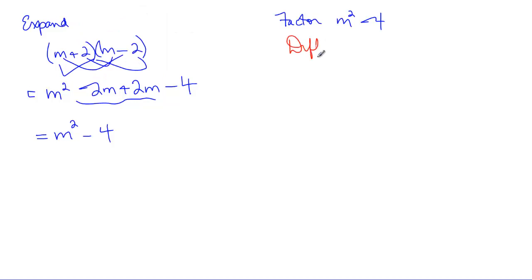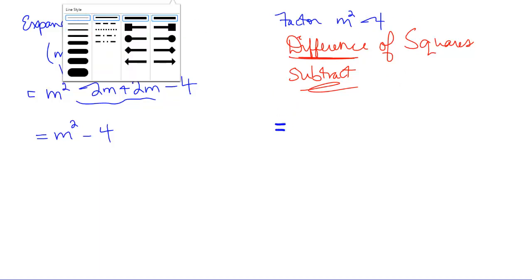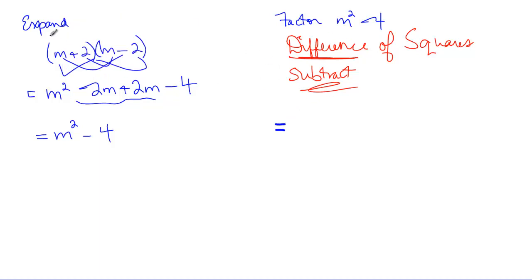How can we use what just happened here to find a pattern to factor this? This is something, it also has a special name. This is something called a difference of squares. Difference meaning subtract. Difference in math has meaning. Squares, well, you know what squares are in math.